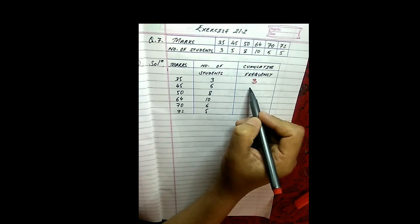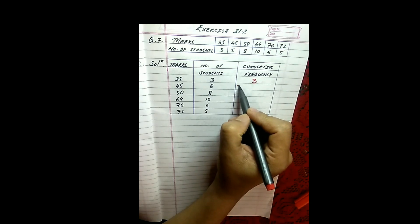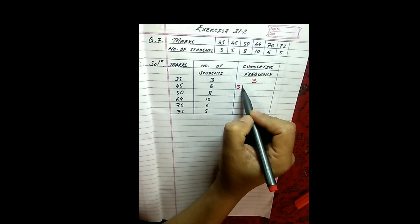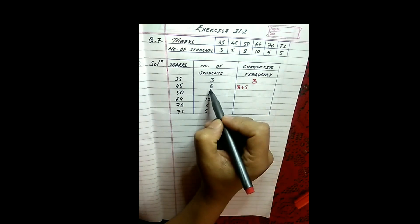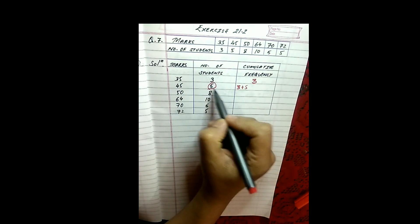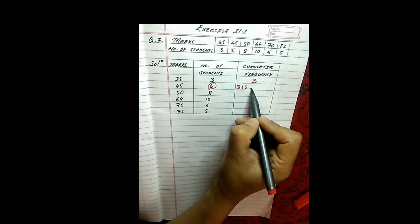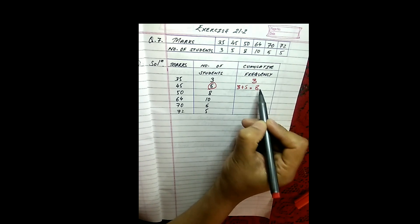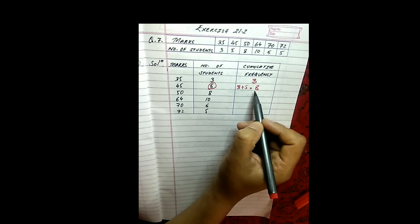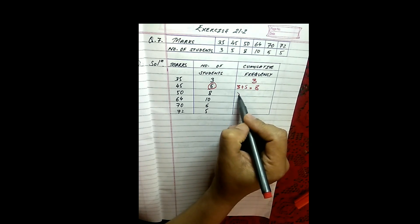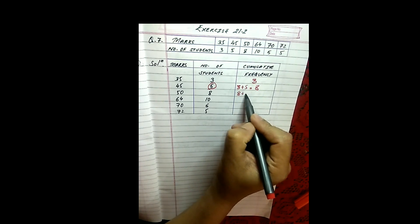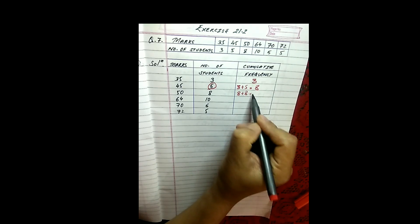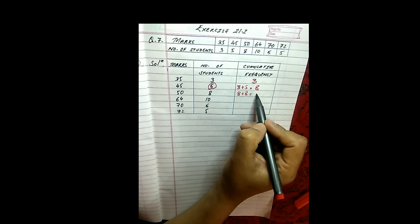To obtain the second, I will add this frequency with the next frequency, which is 5 in this case. So 3 plus 5 will give me 8. Now I am going to add 8 with the next frequency, which is again 8. 8 plus 8 is 16.